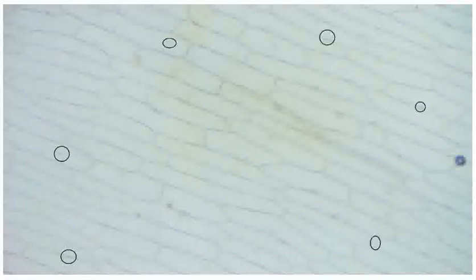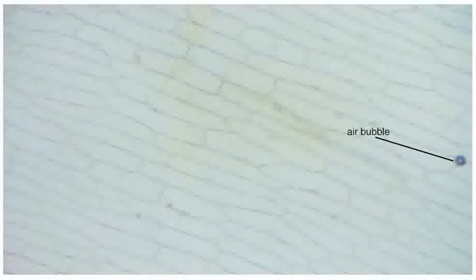What could these small black circles be? These are starch granules, which have been stained black by the iodine. This is just an air bubble trapped under the cover slip.